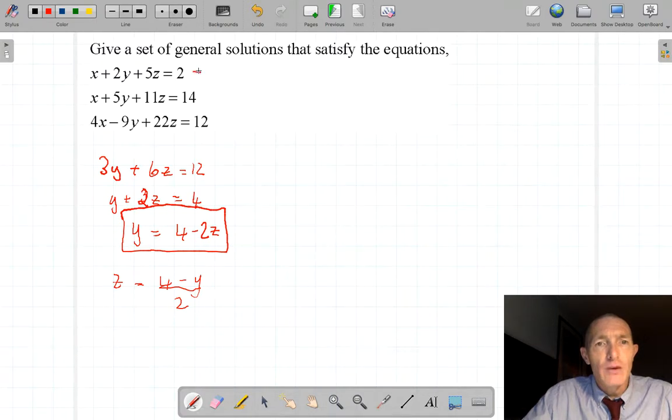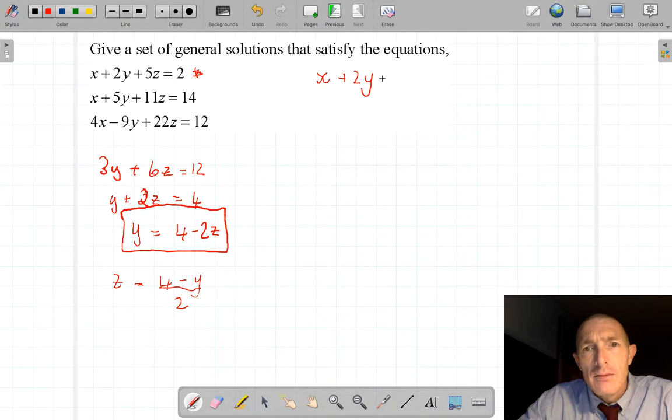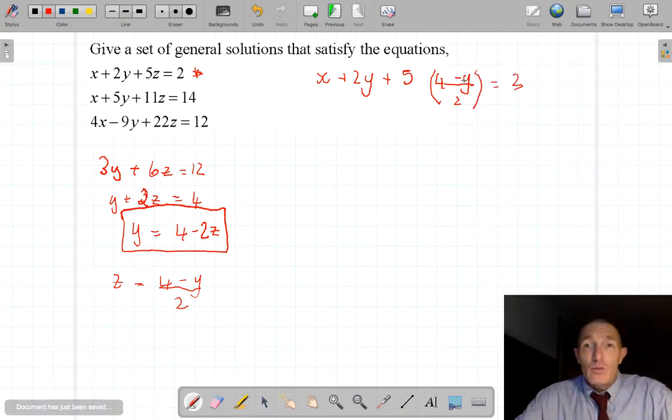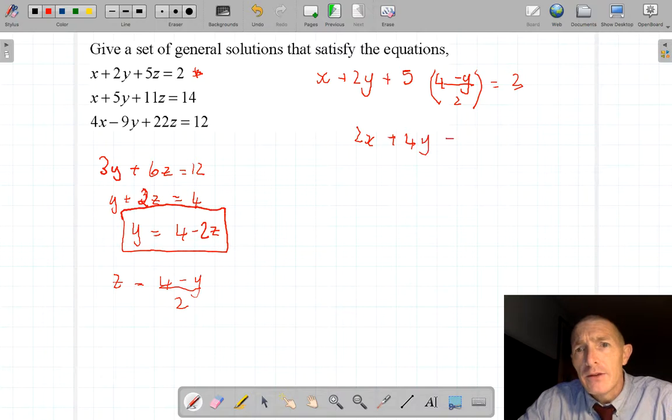So this becomes x plus 2y plus 5 lots of the z. I'm writing z in terms of y, that's 4 minus y divided by 2, equals 2. Now I'm going to do a bit of algebra on here just to get this as y equal. So I need to multiply everything through by 2. I've got the plus 20, I'm also expanding this bracket as you can see.